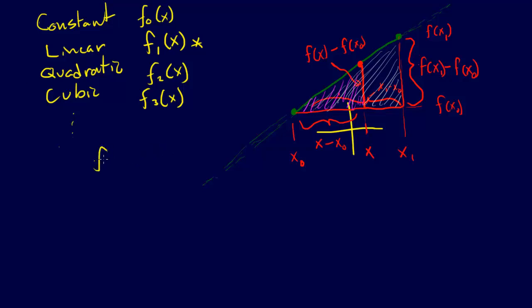So that just is, and we'll do the Y's on top, so this to this is equal to this to this. So the F of X1 minus F of X naught over X1 minus X naught equals F1 of X minus F of X naught divided by X minus X naught. So this is the equation that we have here, and we can just rearrange that.